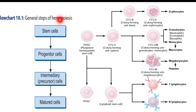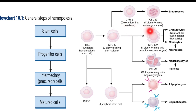Before going to the proper steps of erythropoiesis, we look at the general steps of hemopoiesis. Here, stem cells are converted to progenitor cells, progenitor cells are converted to intermediate or precursor cells, and these get matured to form the mature or final cells. Stem cells have two unique properties: self-renewal and cell differentiation. Progenitor cells are of two types: CFU-B (colony forming unit blast) and CFU-E (colony forming unit erythrocytes).